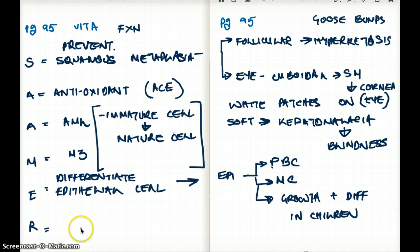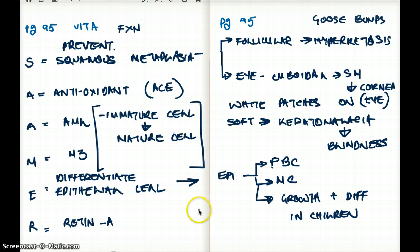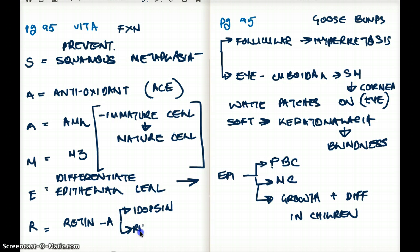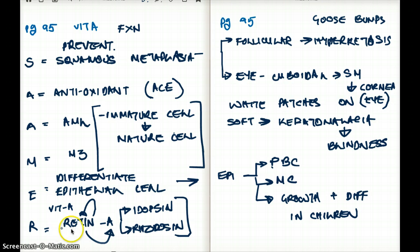Vitamin A also becomes an important component of the retina. The retina of the eye has two components: iodopsin and rhodopsin. These two components are made up of retinal, which is helped to be made by vitamin A — you can remember this as 'retina, vitamin A.' Those are some of the functions of vitamin A.